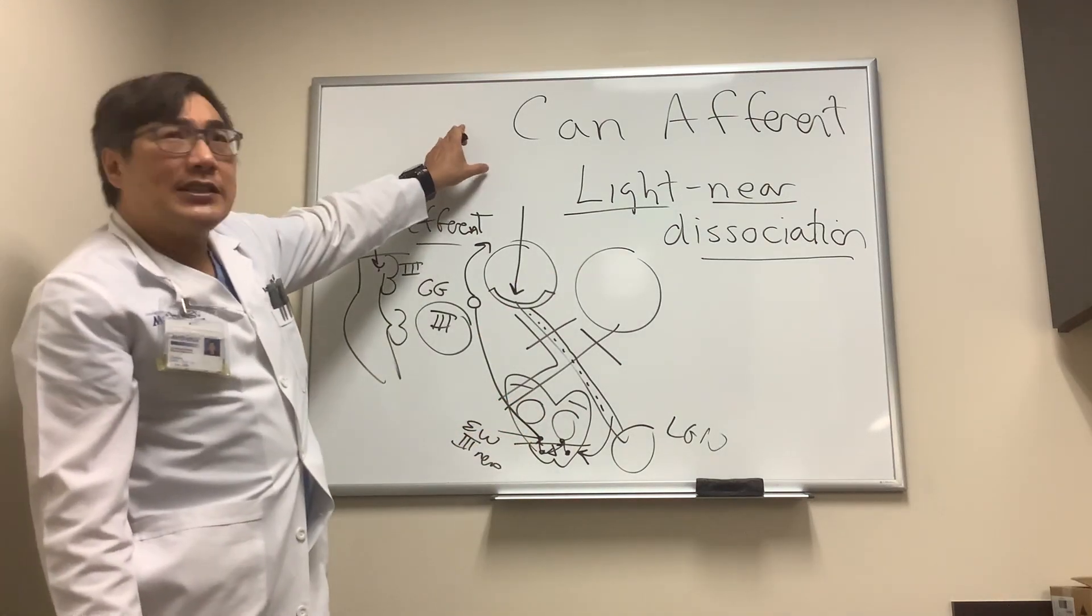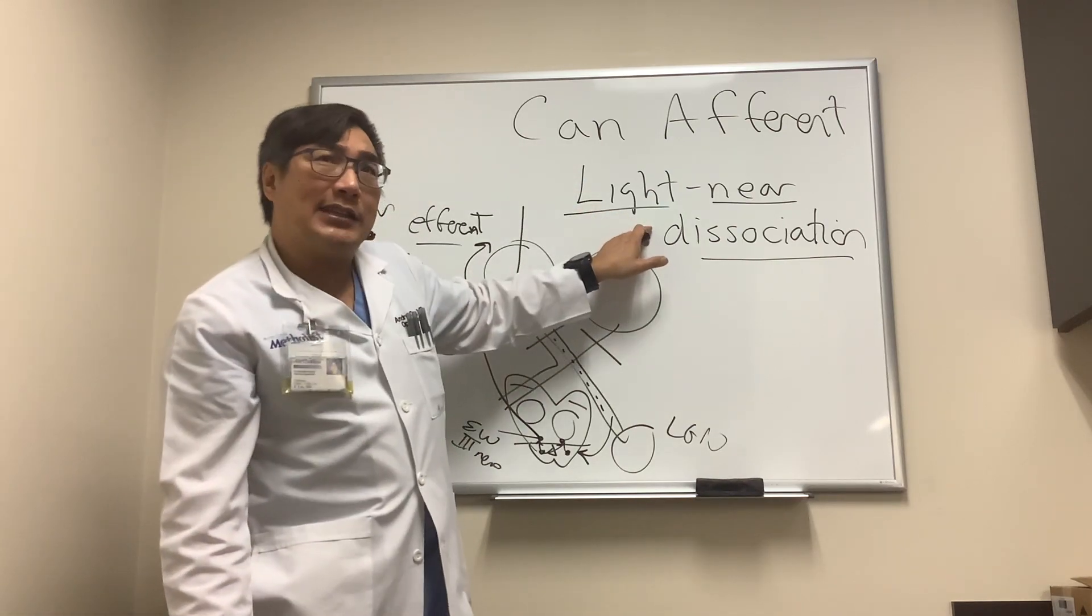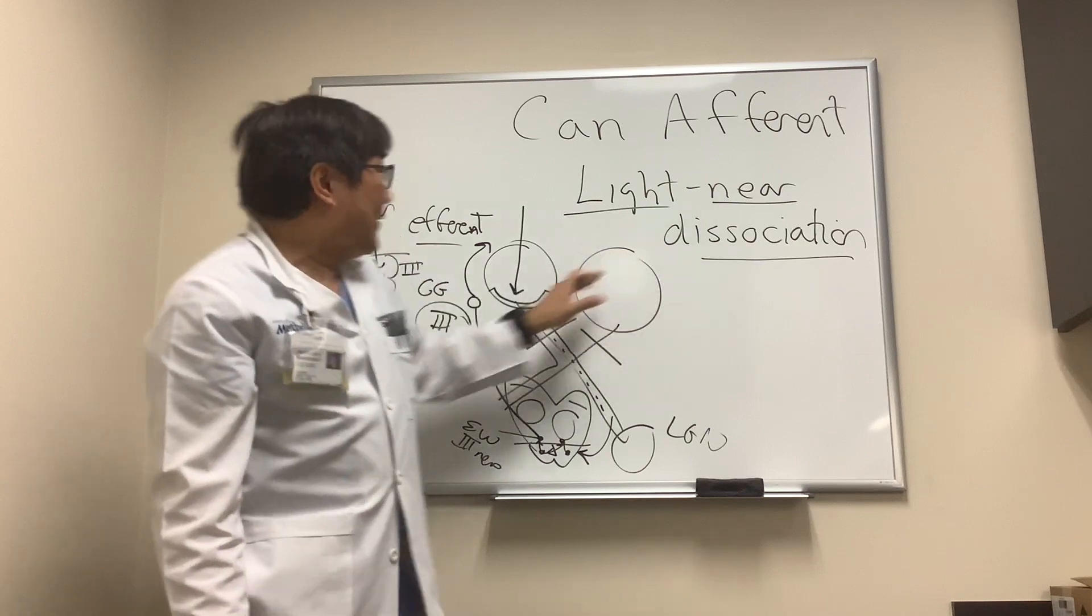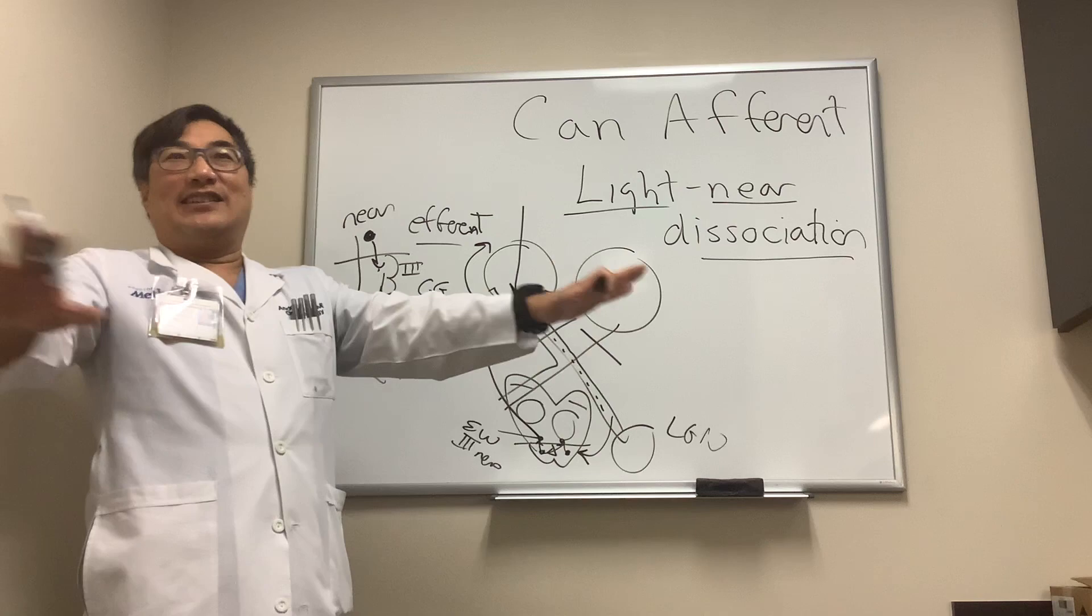So can afferent disease cause a light-near dissociation? Yes. How? It dissociates the light and the near pathway because the near pathway actually can talk to the efferent pupillary pathway without the light at all.